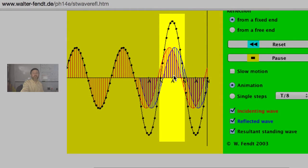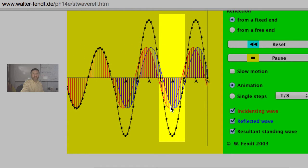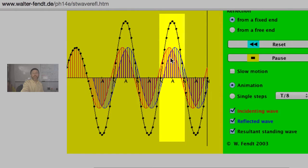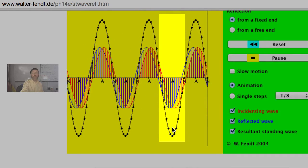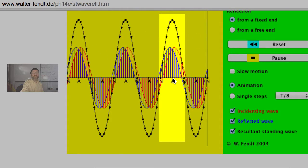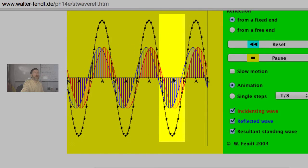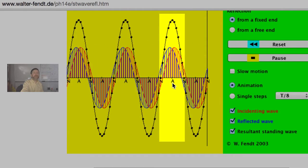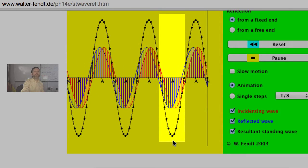At this point they always interfere constructively—we got troughs adding to troughs right there and we've got crests adding to crests right there, and no matter what they're always adding up. Now why is it that this point right here, when it actually hits zero, what is interfering constructively to make it add up to zero? Notice that when it actually crosses the middle line when it's zero, what's the amplitude of both waves when this black wave is zero?